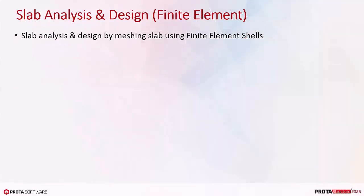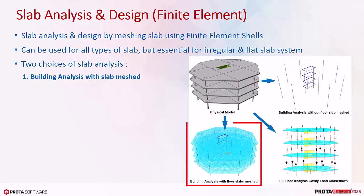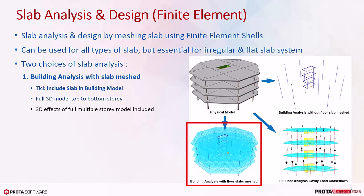Slab analysis and design can be performed by meshing slab using finite element shells. This method can be used for all types of slab, but it is essential for irregular and flat slab systems. There are two choices of slab analysis. Building analysis with slab meshed includes slab and building model, assuming a full 3D analytical model from top to bottom story, so inherent 3D effects of multiple stories are included and gravity and lateral load effects can be obtained.